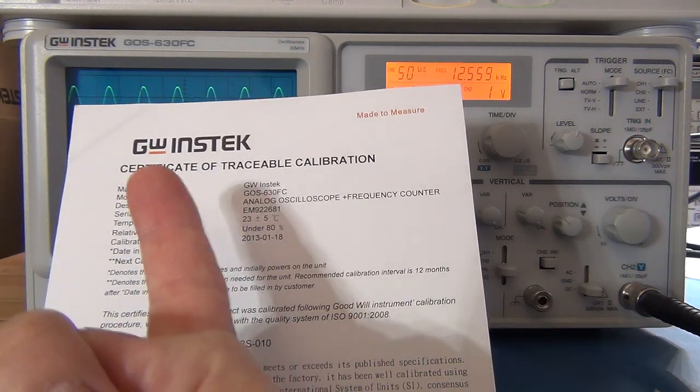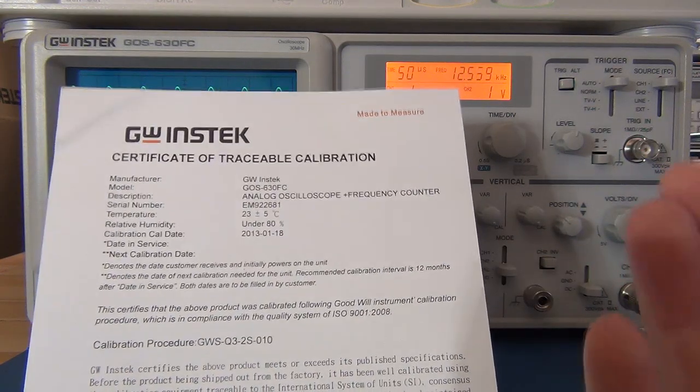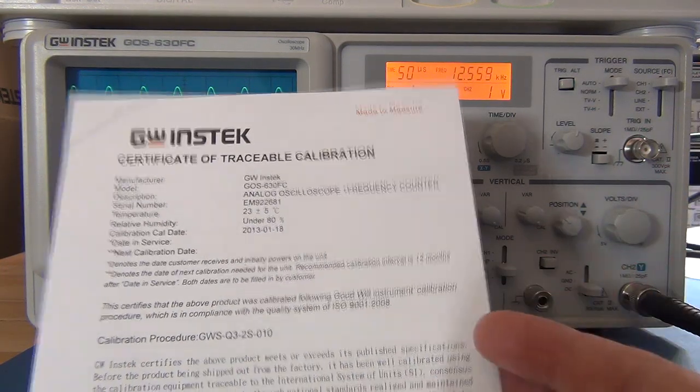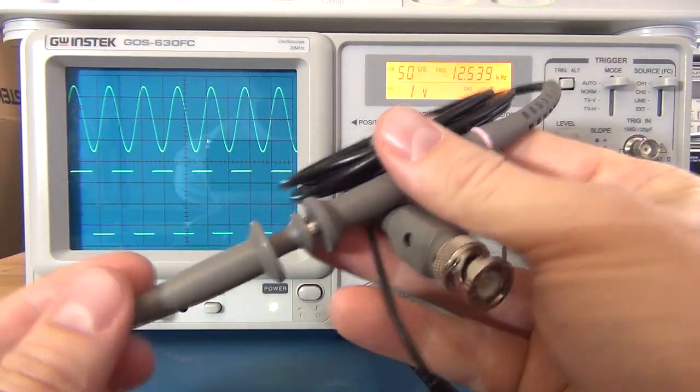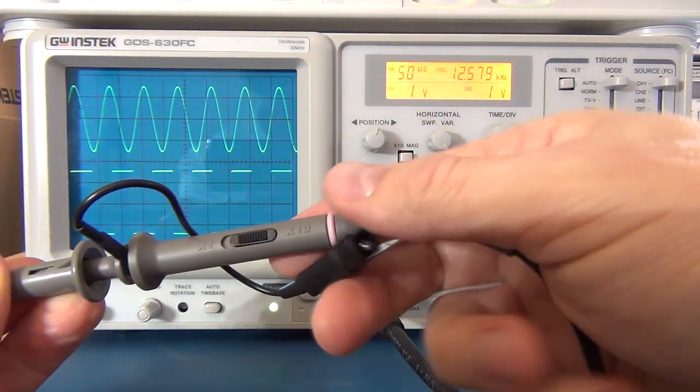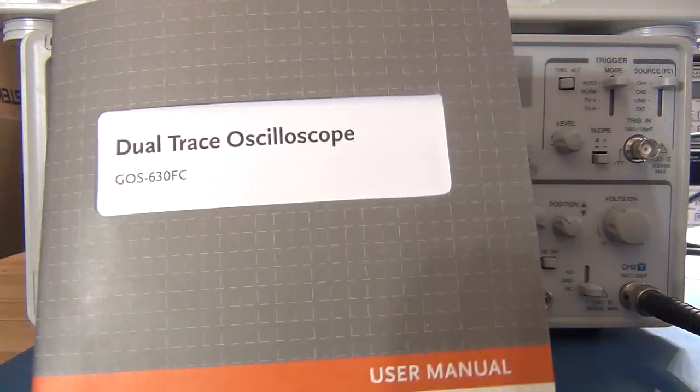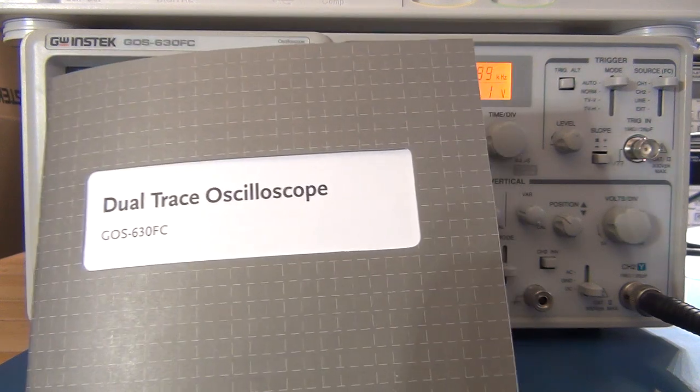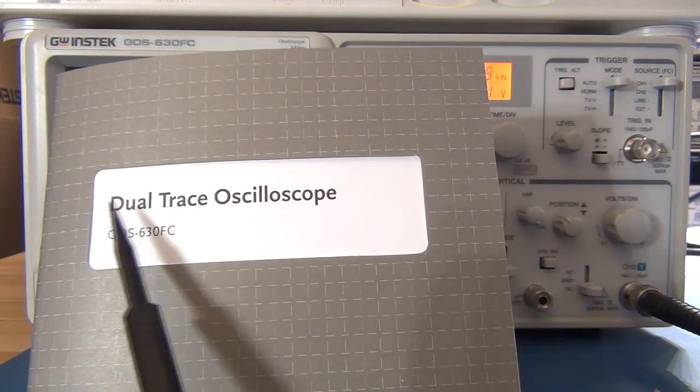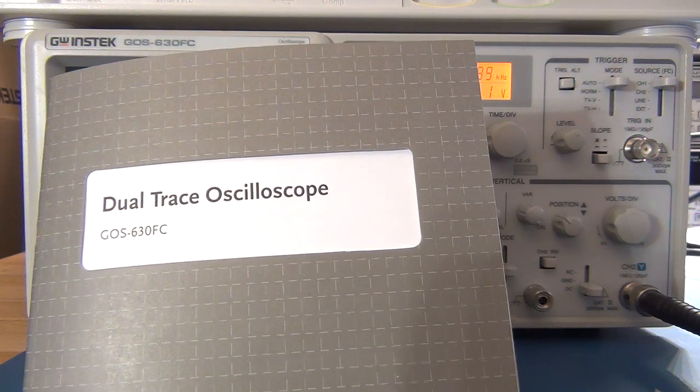This scope does come with a certificate of traceable calibration from GW Instec. If you get the Isotec version of these, you can get a current Isotec or RS components certificate of calibration as well. It comes with a set of probes, both x10 and x1, a set of two for the two channels. It comes with a nice user manual.